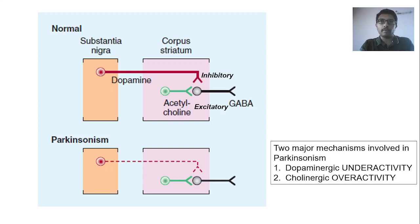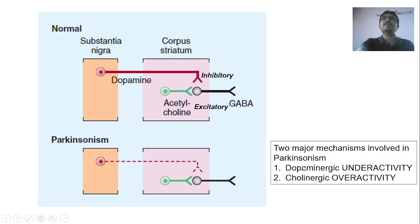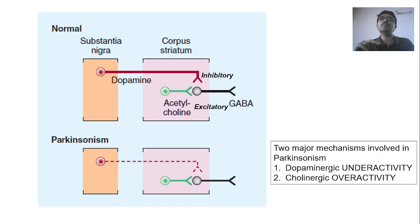With this concept in mind, to treat Parkinson's disease, you understand the pathology is because of degeneration of the neurons. The best approach would be to achieve regeneration, but unfortunately that is not possible. So the alternative approaches are: either increase the dopaminergic activity or decrease the cholinergic overactivity, or do both.